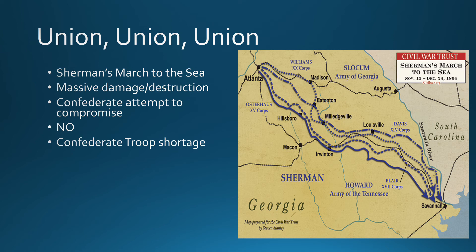The Confederates' troop problem continues to the point that they finally decide to give slaves the opportunity to fight. By the time they do this, however, it is way too late. It would be interesting to consider what might have happened had the Confederacy been willing to utilize slaves for fighting earlier, but they waited until the very end and it doesn't work out.